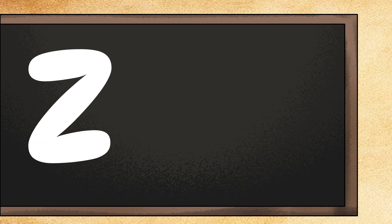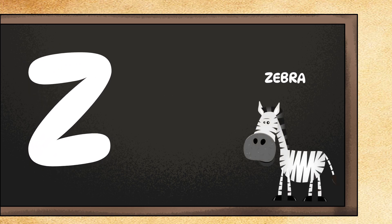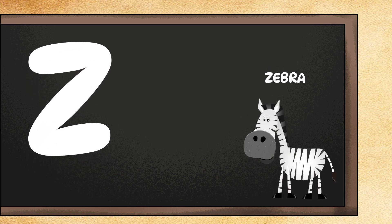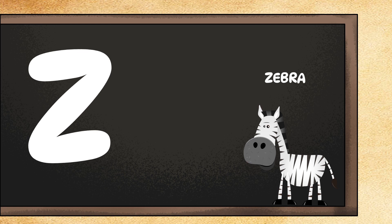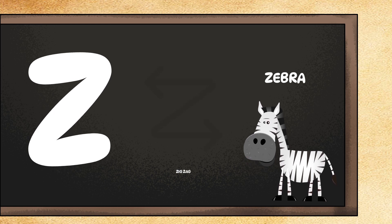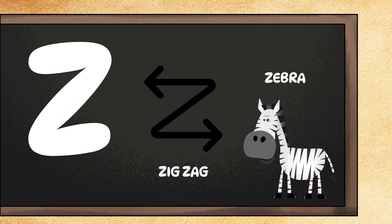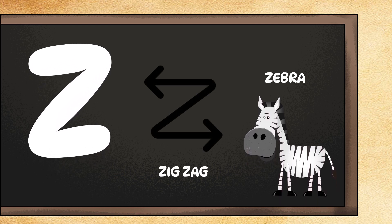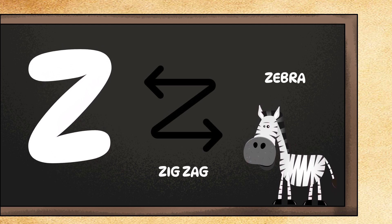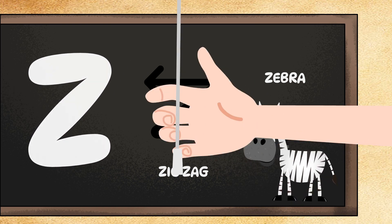Z is for zebra. Can you make zebra stripes with your hands? Awesome! Z is also for zigzag. Can you move in a zigzag pattern? Zigzag! Zigzag!